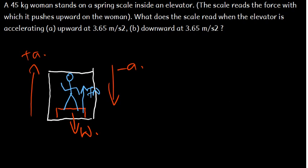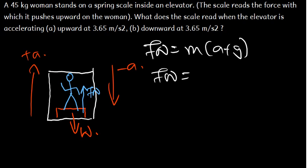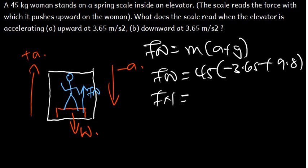So we are saying that the general formula is this. So we have the normal force, so we have 45, then now it's going to be negative 3.65 plus 9.8. The answer I'm getting is 276.67. Okay, so that is it for this video.